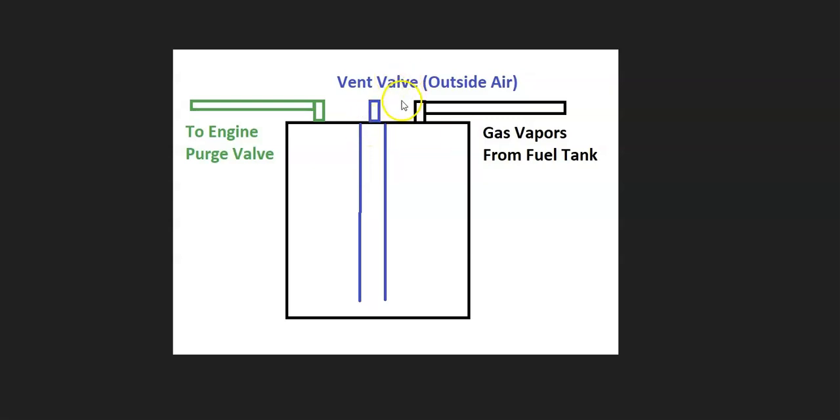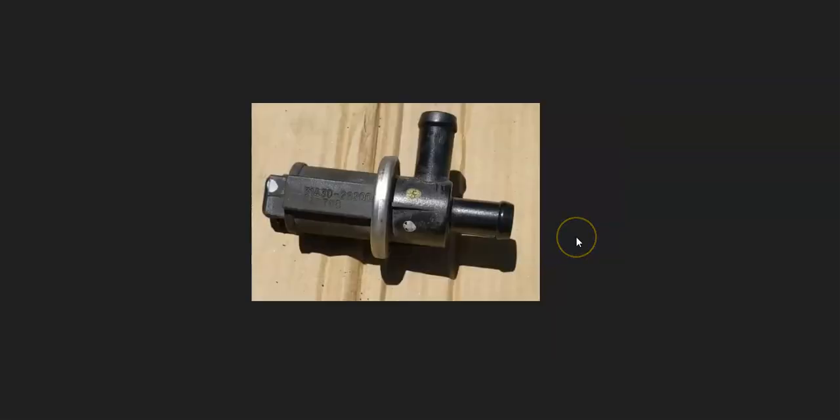This vent valve is a common problem inside of charcoal canisters. If this vent valve goes bad and it gets stuck shut, or if it gets clogged up—sometimes they get clogged up by mud or something like that—when you go to fill up the gas tank, all the gas vapors aren't going to have any place to go because the engine's not running. Normally they would filter through and go out that vent valve to the outside. But if it's clogged or stuck shut, then that fuel pump will keep clicking off. So if you do have that problem, first thing to check is that vent valve. That vent valve is just a small little solenoid that opens or shuts when the computer tells it to.